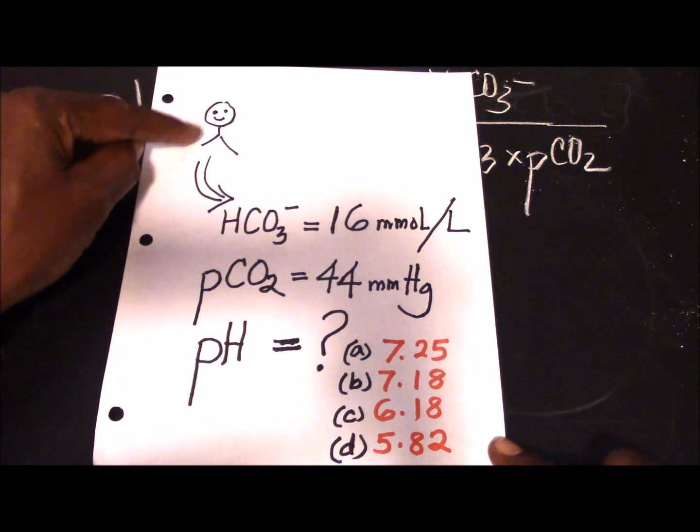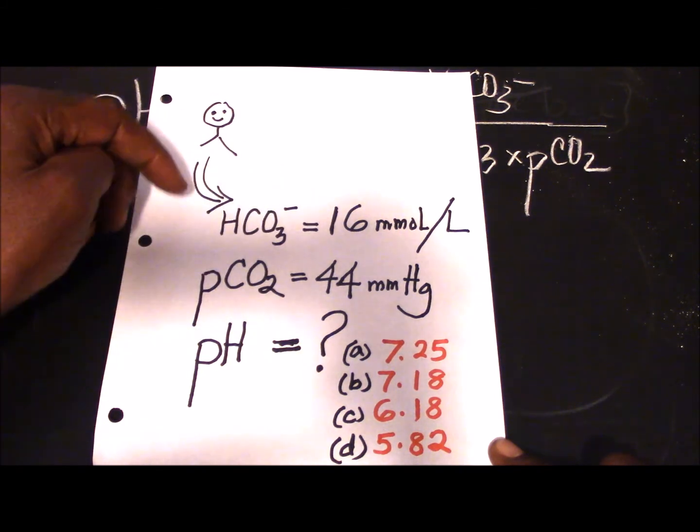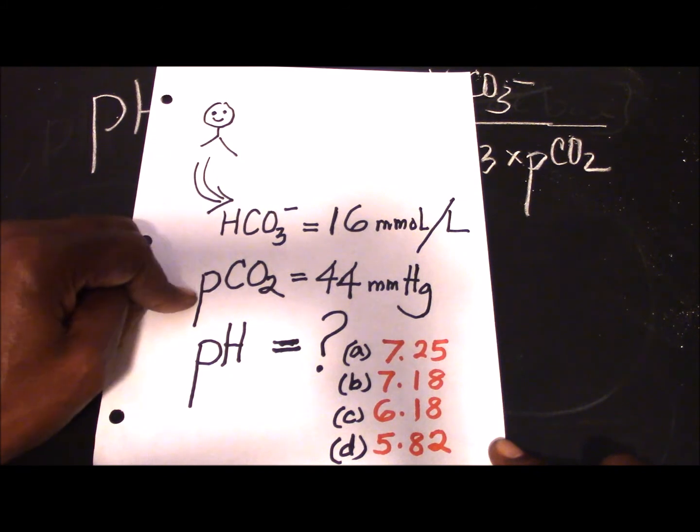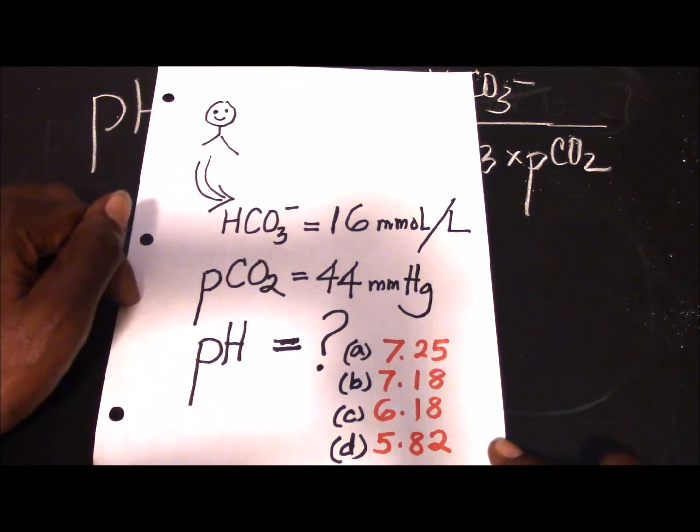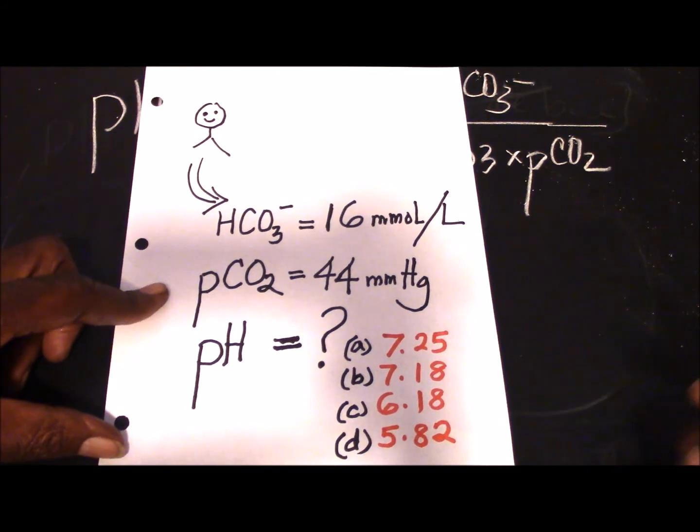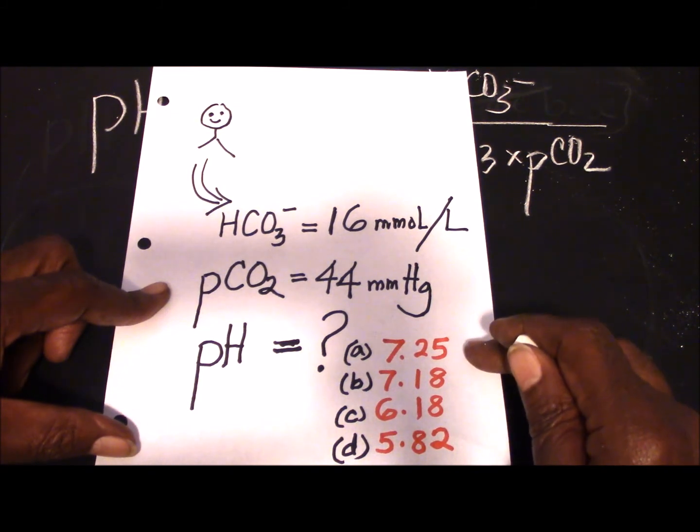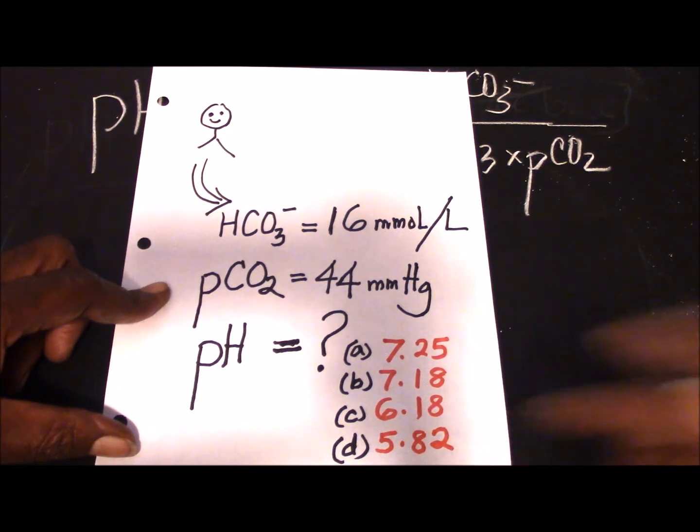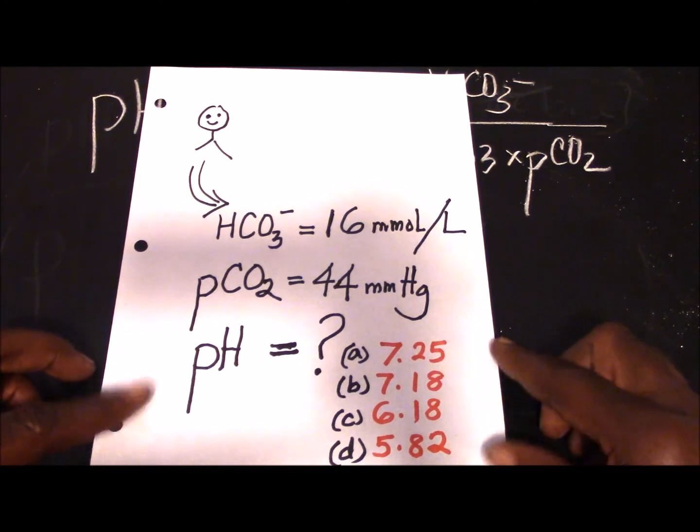Now suppose we have a question like this: that this patient here has a blood gas reading of 16 millimolar for the bicarbonate, and that the partial pressure of the carbon dioxide is at 44 millimeters of mercury. What is the pH? That is the format it will take in the exam, and you have two choices: either you do the calculation with confidence and then pick the right answer here, or you take a guess. So let's attempt to solve this problem.